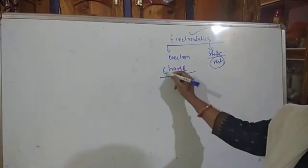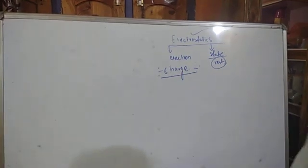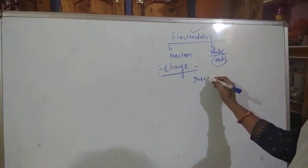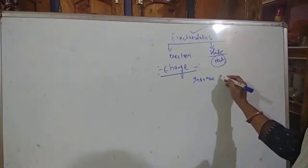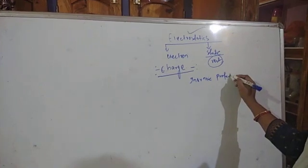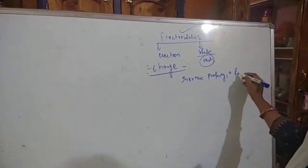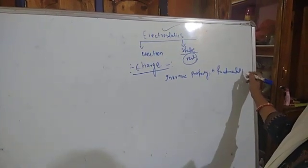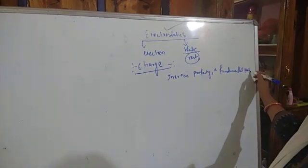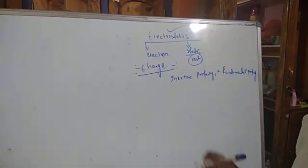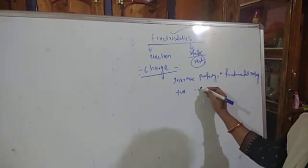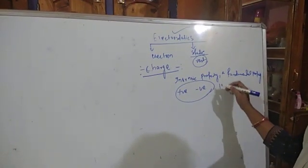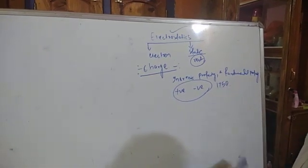What is charge? We have to know it first. Charge is just an intrinsic property, or we can say a fundamental property. Basically there exist two types of charges — positive and negative — which was given by Benjamin Franklin, an American scientist, in 1750.